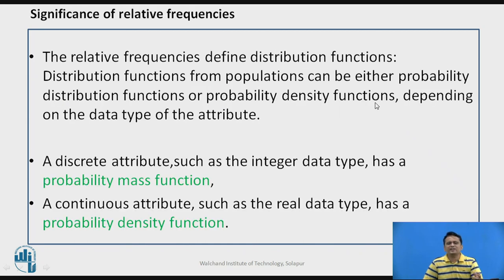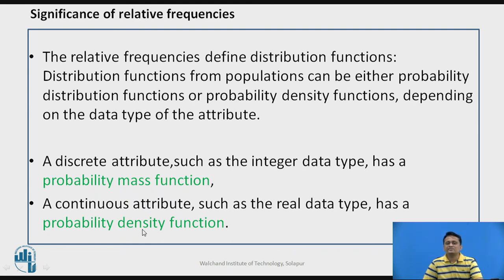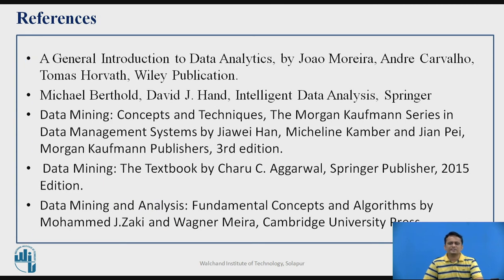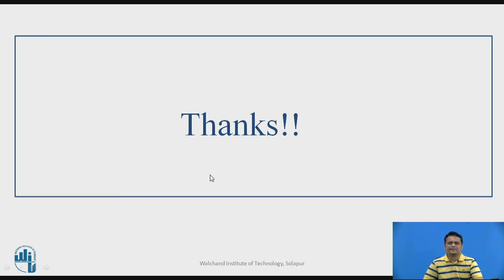Finally, when relative frequencies are calculated for a discrete attribute, they can be used for a visualization called a probability mass function. If the attribute is continuous, you can derive a probability density function from the frequency values. That concludes this online class. Thank you.